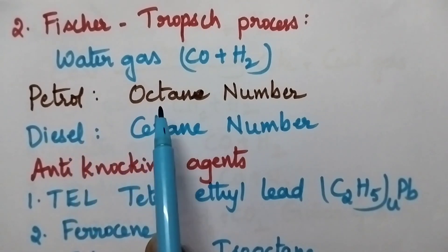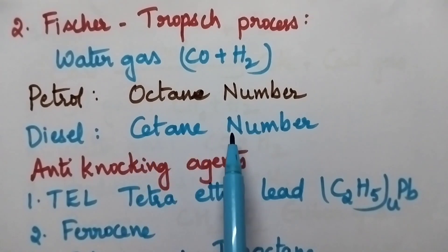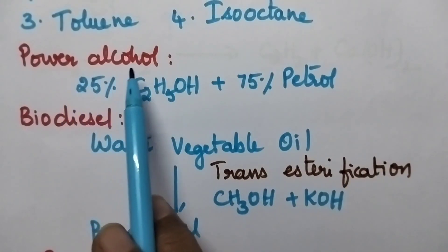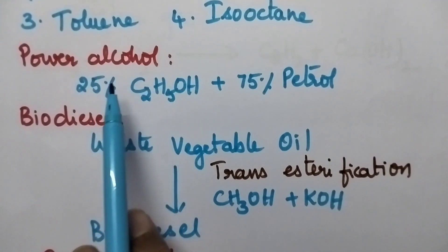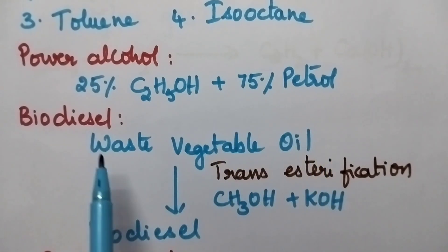Petrol efficiency can be measured in terms of octane number whereas diesel efficiency can be measured in terms of cetane number. In order to prevent knocking, anti-knocking agents can be added to the petrol. The most widely used knocking agents are TEL, ferrocene, toline, isoctane. TEL means tetraethyl lead. In order to reduce knocking properties, power alcohol can be advised. It is the composition of 25% ethyl alcohol plus 75% petrol. Coming to the biodiesel, it can be produced from waste vegetable oil through trans-esterification. Methanol plus KOH can be used for the trans-esterification.